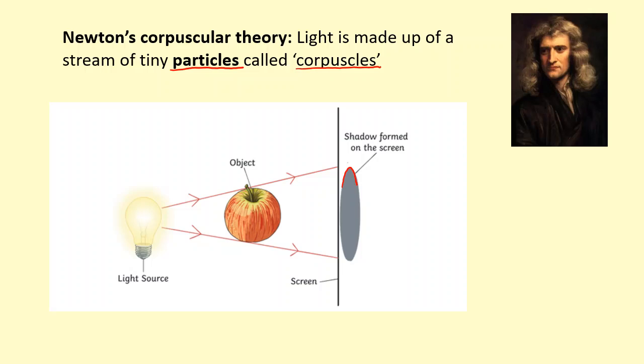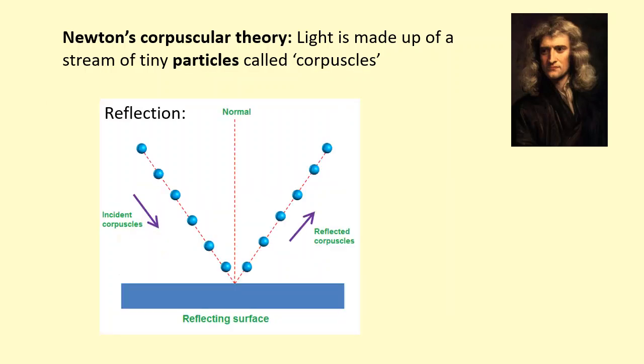He assumed that it was particles traveling in straight lines. At that point in time, they hadn't measured diffraction with enough precision to know that it can bend around corners. He also explained reflection successfully.